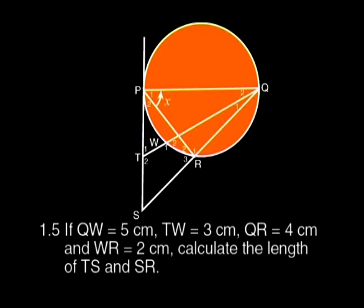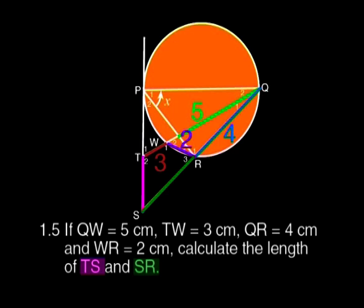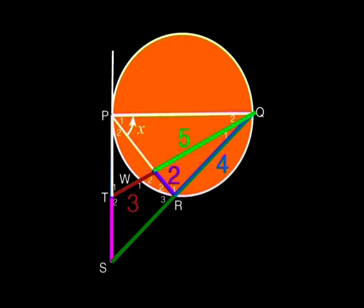Question 1.5. If QW equals 5 cm, TW equals 3 cm, QR equals 4 cm, and WR equals 2 cm, calculate the length of TS and SR. It is always worth spending a minute or two looking at what we are given.